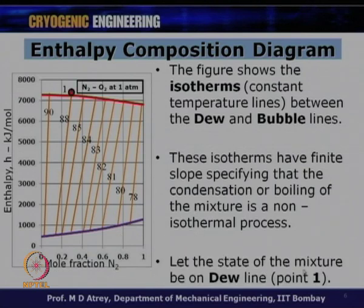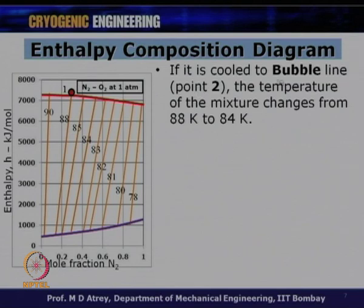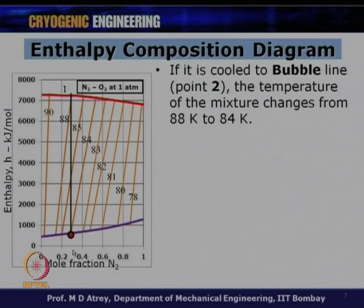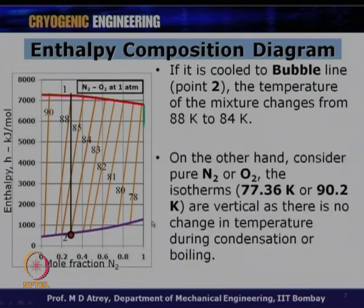Let the state of the mixture be on the dew line at point 1. Starting condensation from point 1 and cooling to the bubble line at point 2, the molar composition must remain the same. At point 1, the temperature of the mixture is around 88 Kelvin; when the mixture gets condensed to point 2, the temperature is around 84 Kelvin. So the temperature changes from 88 K to 84 K during the phase transformation.